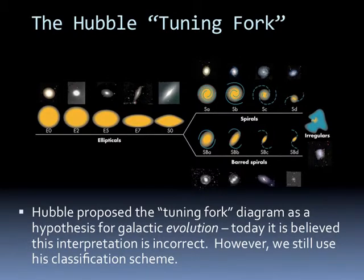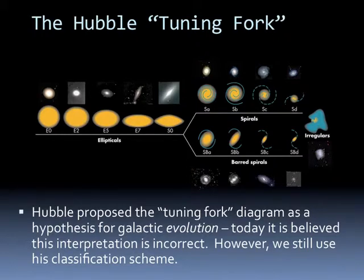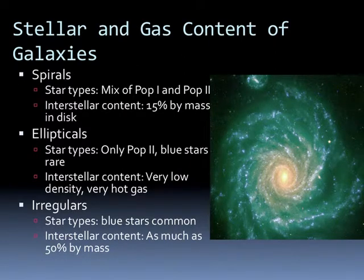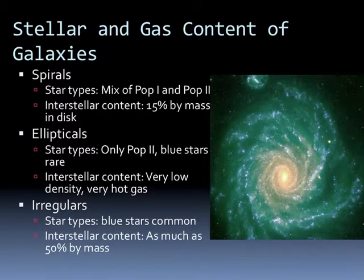Hubble proposed a tuning fork diagram — from elliptical off to different spirals — as a hypothesis for galactic evolution. Today, it's believed this interpretation is incorrect. We still use the classification scheme, but galaxies don't go from spherical to elliptical to spirals; in fact, it's more likely they go from spirals to elliptical. Spirals have a mixed population of Population I and Population II stars, with interstellar content about 15% by mass in the disk. Ellipticals are basically only Population II, blue stars are very rare, and interstellar content is very low-density, very hot gas. In irregulars, blue stars are very common and interstellar content can be as much as 50% of the galaxy's mass.